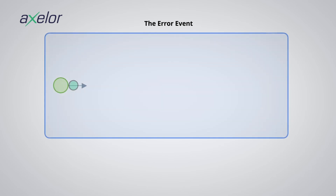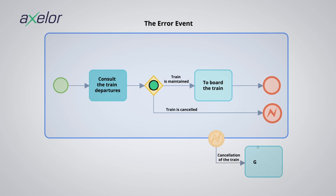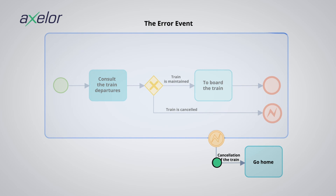In this example, when we consult the train departures, we have two options: either the train is maintained and boarding is possible, or the train is canceled — in this case the cancellation error event is activated. This activation triggers the train cancellation boundary event, and simultaneously the sub-process is deactivated and the 'go home' activity is activated.